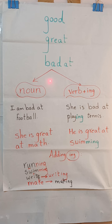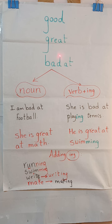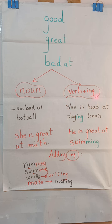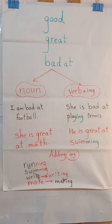Let's look at the second part of the grammar: 'good,' 'great,' and 'bad' — used with 'at': good at, great at, bad at. These three words can be followed by either a noun or a verb plus -ing. For example, I'm bad at football — 'football' here is a noun.